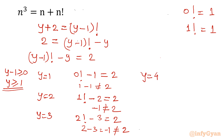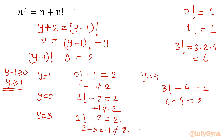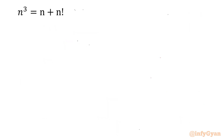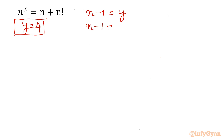Now try y equal to 4: (3)! minus 4 equals 2. Since 3 factorial is 3 times 2 times 1 equals 6, we get 6 minus 4 equals 2. That is correct, so y equals 4 is the solution. Substituting back, n minus 1 equals 4, so n equals 5.